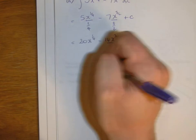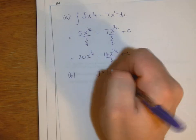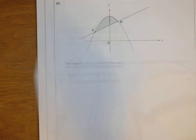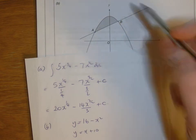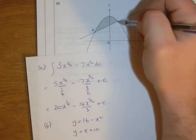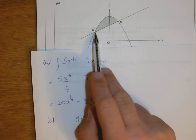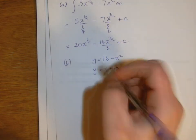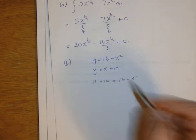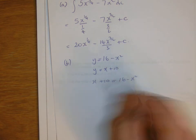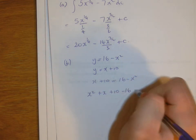We have the curve y equals 16 minus x squared and the line y equals x plus 10. We're going to solve them simultaneously. Where they intersect, the y values will be equal — for the curve and the line, the y values will be the same at A and B. So we set x plus 10 equals 16 minus x squared, because the y values are the same. Get everything onto one side: x squared plus x plus 10 minus 16 equals zero.